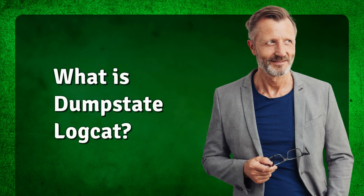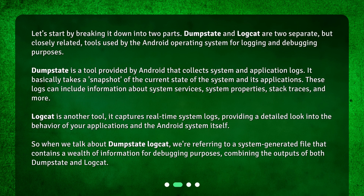What is Dump State LogCat? Let's start by breaking it down into two parts. Dump State and LogCat are two separate but closely related tools used by the Android operating system for logging and debugging purposes. Dump State is a tool provided by Android that collects system and application logs. It basically takes a snapshot of the current state of the system and its applications. These logs can include information about system services, system properties, stack traces, and more.